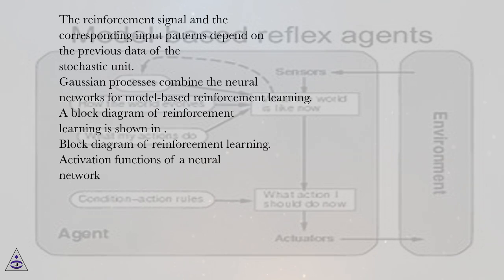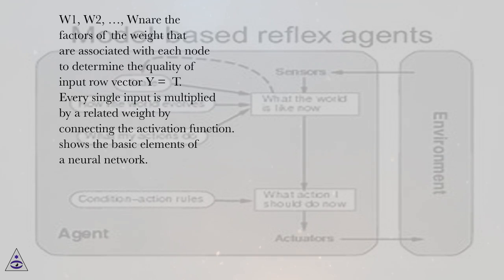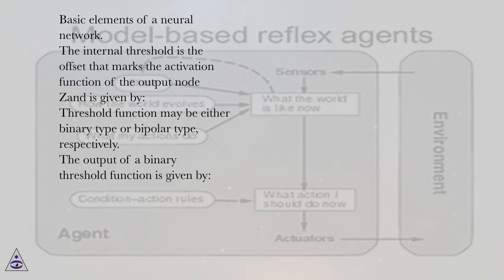Activation functions of a neural network. W1, W2, are the factors of the weight that are associated with each node to determine the quality of input row vector y equals t. Every single input is multiplied by a related weight by connecting the activation function. Shows the basic elements of a neural network.